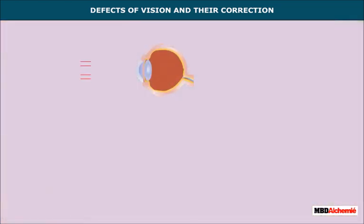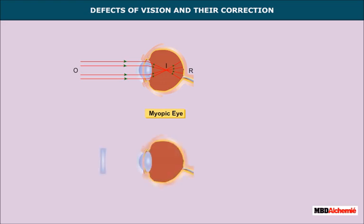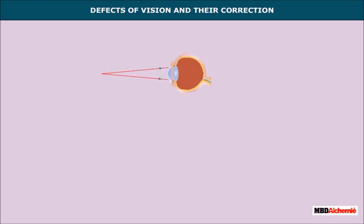In myopia, the person can see near objects but cannot see distant objects clearly, since the image is formed in front of the retina. This is because the power of the eye is too great and the focal length is too small, due to excessive curvature or elongation of the eyeball. For correction, a concave or diverging lens enables the parallel rays from a distant object to diverge before they fall on the lens, thus allowing a myopic eye to be corrected by using a concave lens.